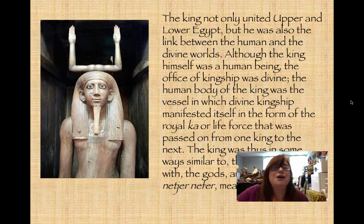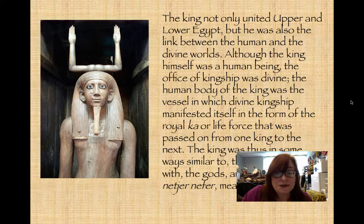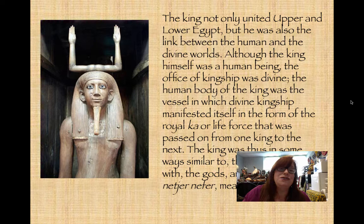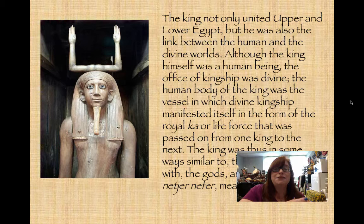A lot of times actual hieroglyphs get worked into the artwork. We're looking at a ka statue. The ka is one part of the soul — the Egyptians believed the soul was made up of multiple parts. The ka is the force that can go into statues and receive offerings. The symbol for the ka is two arms joined together, and on this ka statue you've actually got the symbol for ka sitting on the figure's head. The king was considered similar to but not identical to the gods — one of his titles is netjer nefer, meaning 'perfect god.'